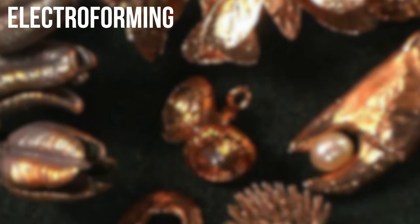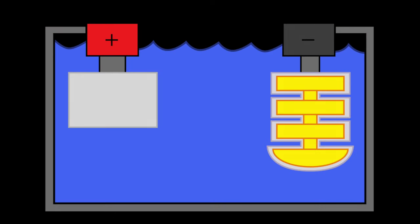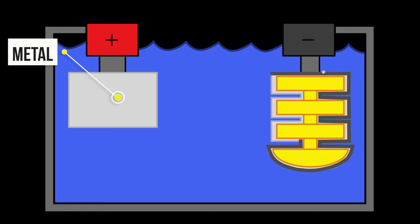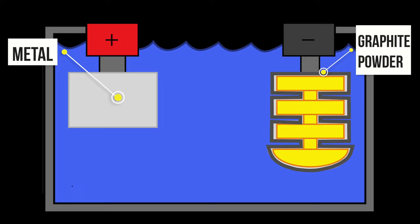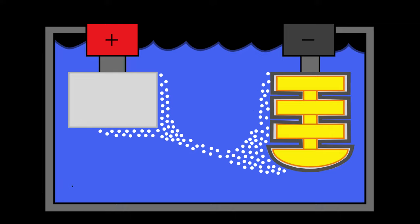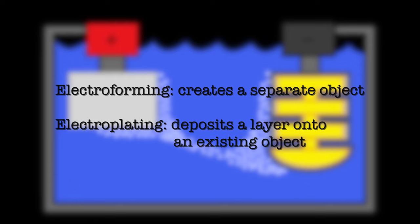Electroforming is a process of making a replica of objects using electrolysis. The object to be replicated is pressed in wax to make a mold. Then graphite powder is coated uniformly to make it conducting. This is used as a cathode and the salt of the metal to be deposited is taken as the electrolyte. After getting the required coating by electrolysis, wax and the graphite are melted away. The main difference between electroplating and electroforming is that electroforming creates a separate object, while electroplating deposits a layer onto an existing object.